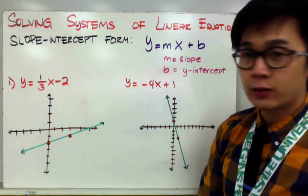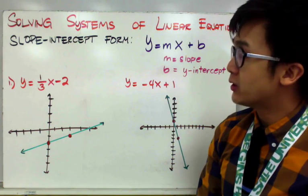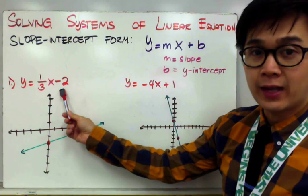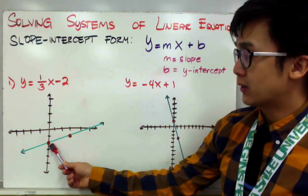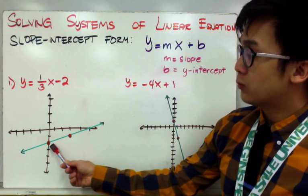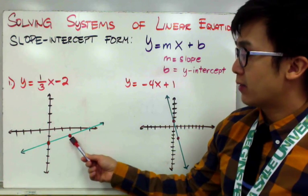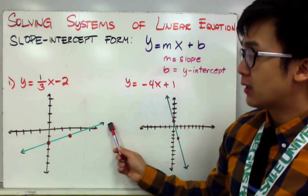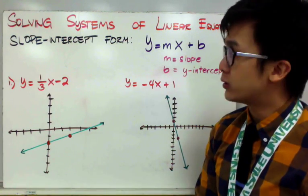For example, we have the linear equation y equals 1/3 x minus 2. Graphing this equation in slope-intercept form is simple. Since our y-intercept is negative 2, we start at negative 2 along the y-axis. The slope determines the second point — since the slope is 1/3, we move one unit up and three units to the right. Connecting those two points creates the line y equals 1/3 x minus 2.